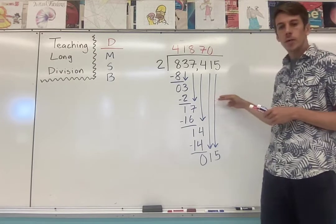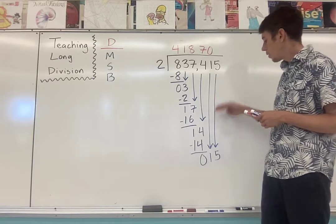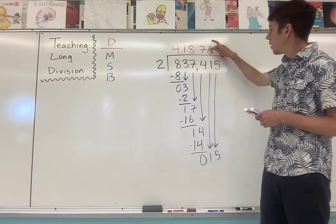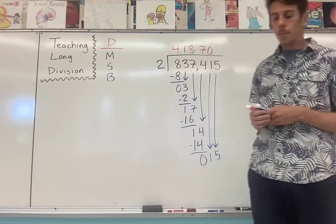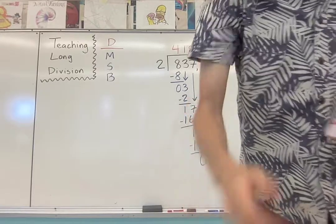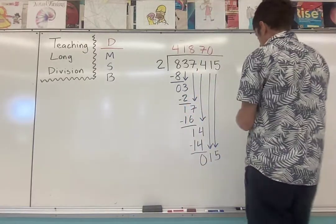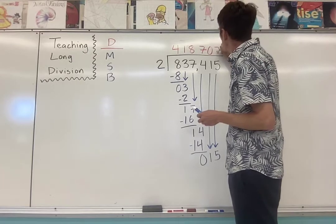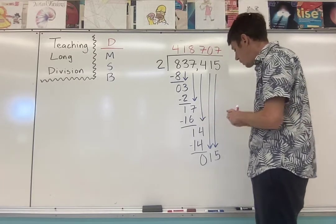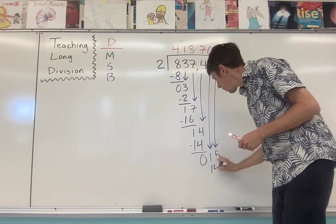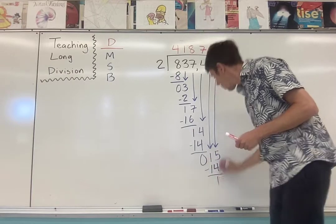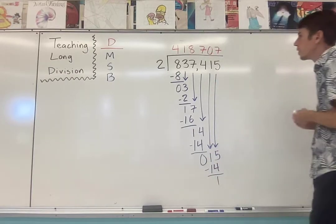So you put a zero there. Anytime you see this double bring down, two arrows next to each other, same length, that first spot is going to be a zero. And we're almost done. Two goes into 15 seven times. Seven times two is 14. Subtract one. Bring down. There's no digit to bring down.